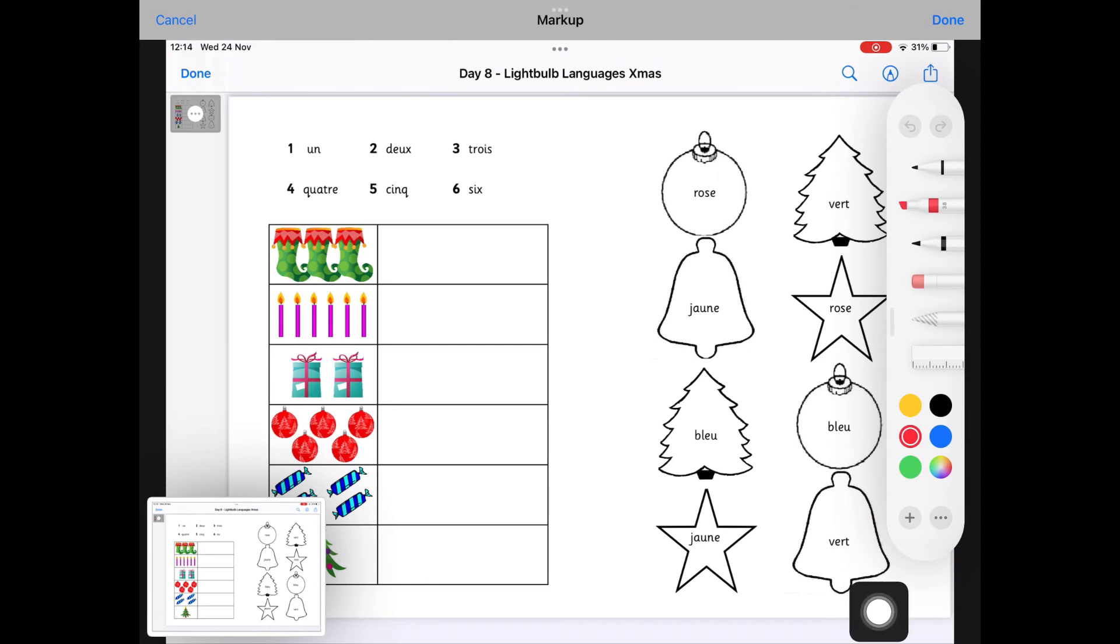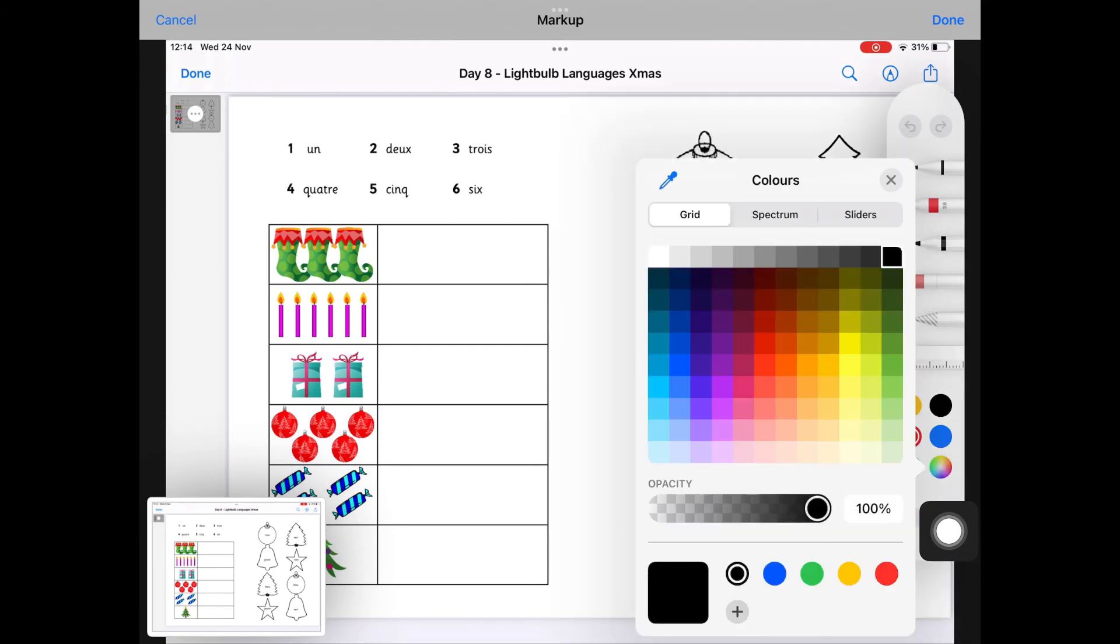You've got colours on the side in your pen box and if you need one that's not there click on the rainbow button and then you can choose a colour from there.